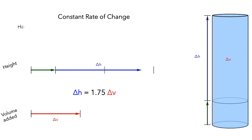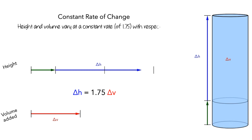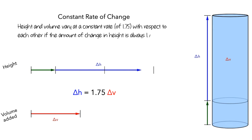In this scenario, height and volume vary at a constant rate of 1.75 with respect to each other, meaning the amount of change in height is always 1.75 times as large as the amount of change in volume.